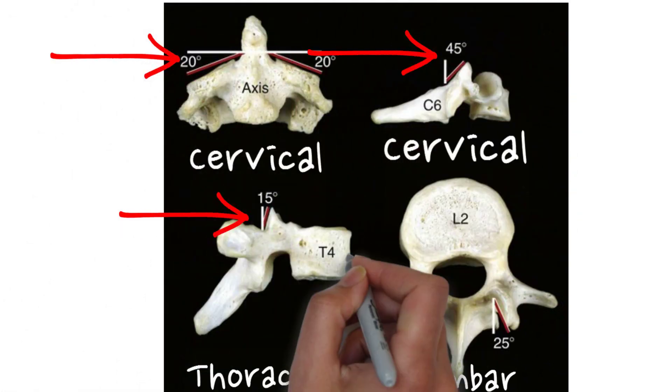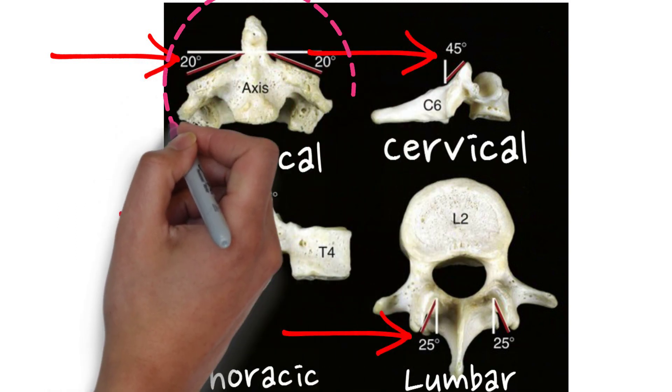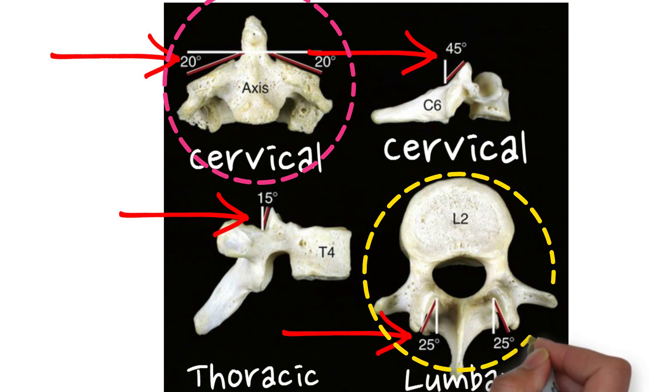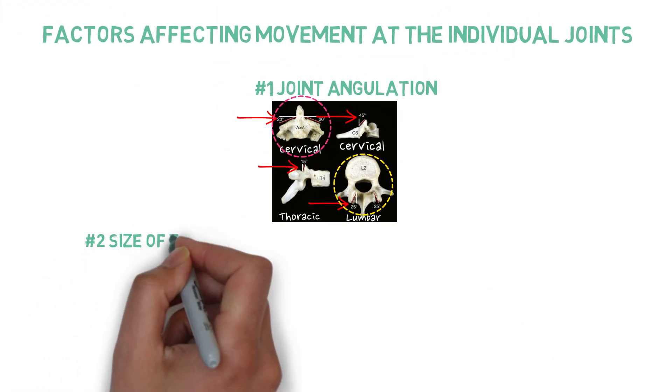For instance, the orientation of the superior facets of the second cervical vertebrae at 20 degrees of the transverse plane allows for a large range of rotation in the cervical spine. And the sagittal plane orientation of the lumbar facets allows for more flexion-extension movements.